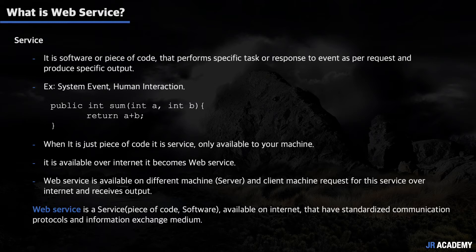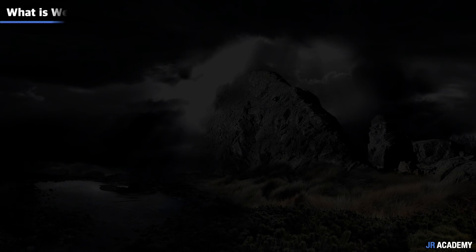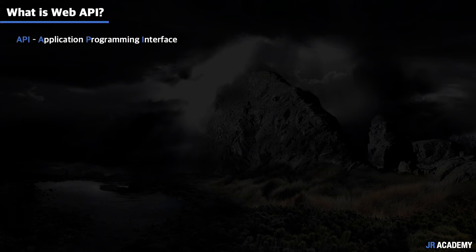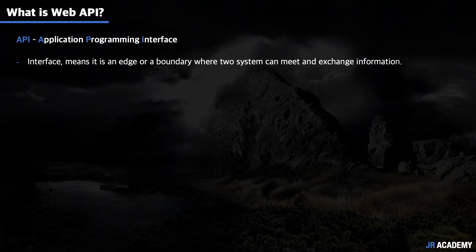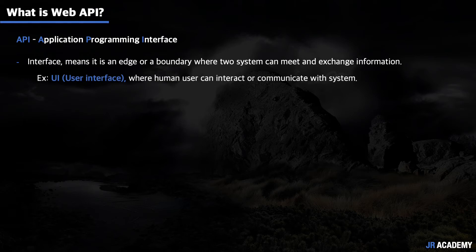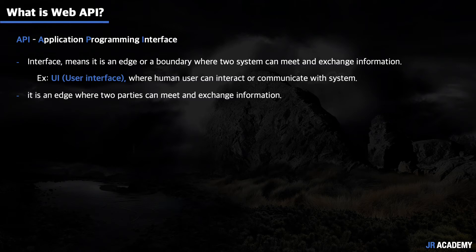We will talk about request-response and communication protocols in upcoming videos. Next question is: what is a web API? First, let's understand what an API is. API stands for Application Programming Interface. The interface means it is an edge or a boundary where two systems can meet and exchange information. For example, we have UI — User Interface — where a human user can interact or communicate with a computer system. There are many different types of interface, but the higher-level meaning is the same: an interface is an edge where two parties can meet and exchange information.